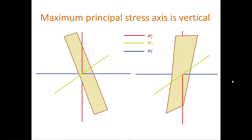I am representing the principal axis of maximum stress with red color — that is sigma one; the intermediate principal stress axis with green color — that is sigma two; and the principal axis of minimum principal stress with blue color — sigma three. As you can see, these are mutually perpendicular to each other.